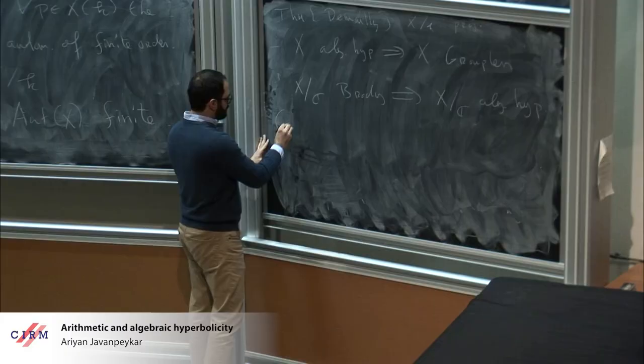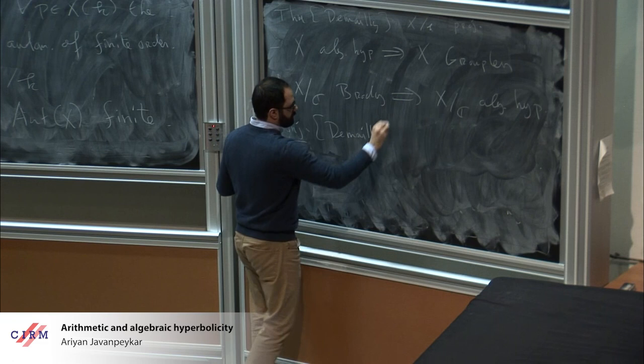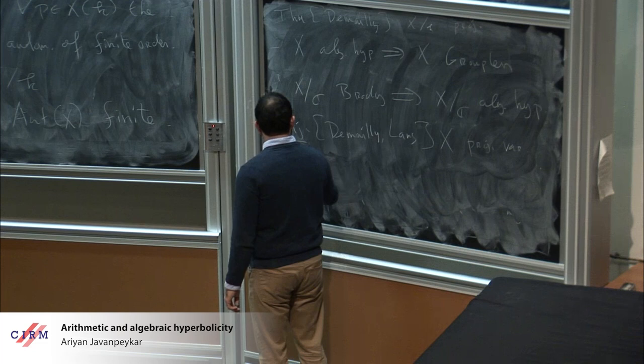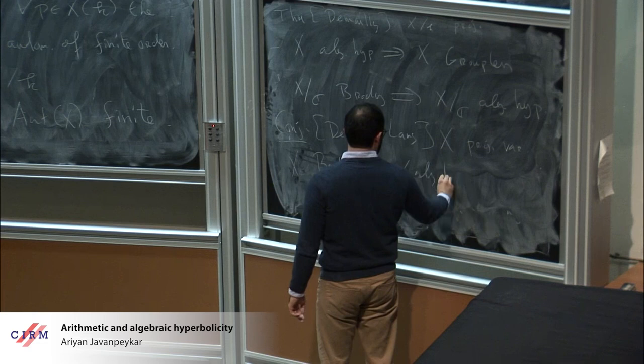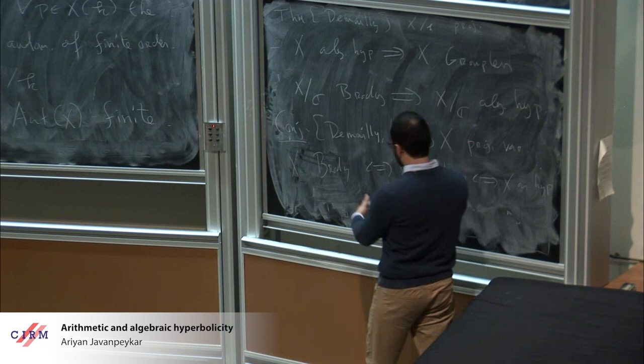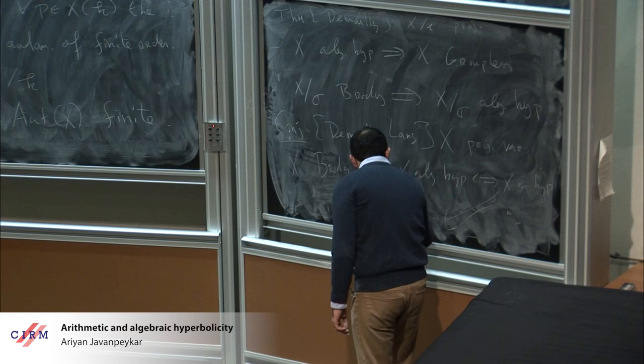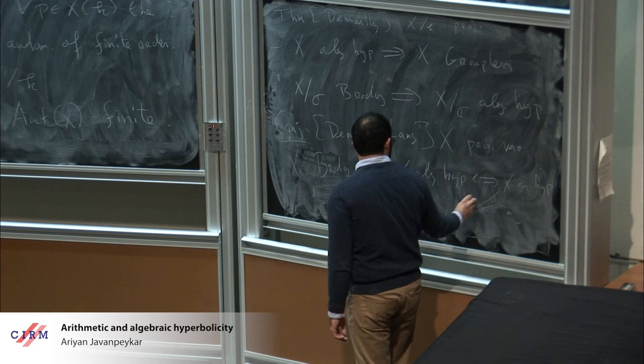The conjecture of Demailly — a consequence of Lang's optimistic conjecture — is that for projective varieties, being Brody hyperbolic, being algebraically hyperbolic, being arithmetically hyperbolic, and being groupless should all be equivalent.